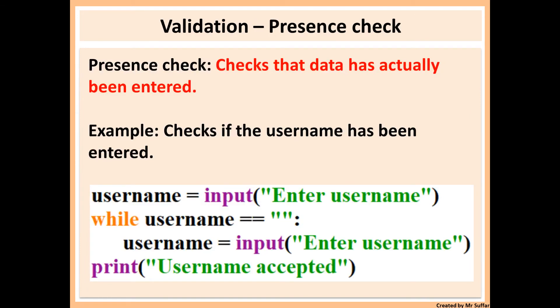Then we have a presence check. Presence check is when you check that the data has actually been entered - they didn't just press enter without entering any data. In this example, we're checking that the username has been entered. We're asking for your username, and then we're checking that data has been entered. We've got while username is equal to empty. If it is equal to empty, then we're asking them for username again. We keep asking them for the username until they enter something. Then it will display username has been accepted.